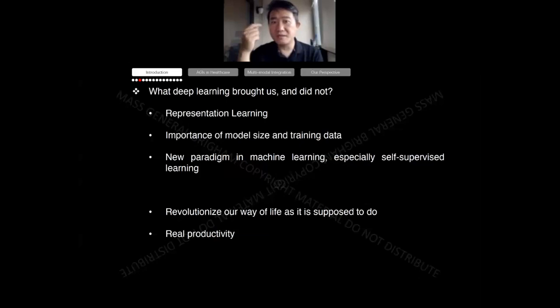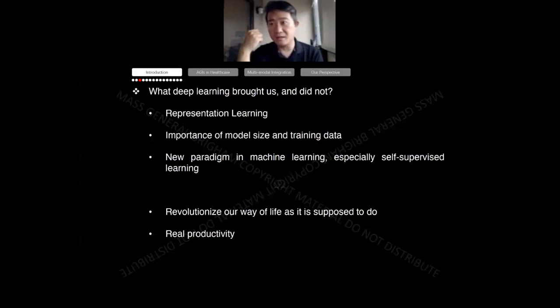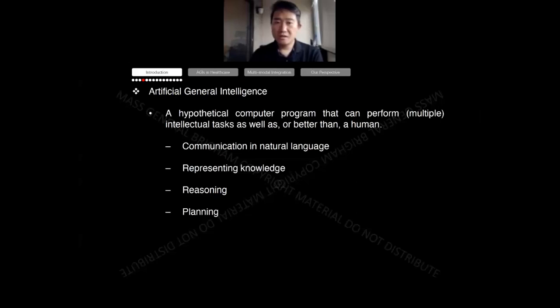That is what we are experiencing now — artificial general intelligence — because deep learning demonstrated the importance of representation learning. This was a concept that emerged in the past decade, along with the importance of model size and training data, which people didn't realize for a long time. Finally, there is the new paradigm in machine learning: self-supervised learning, on which most of the advanced deep learning algorithms rely. From algorithm and data perspectives, deep learning is the more important thing, and it leads us to what we have right now: artificial general intelligence.